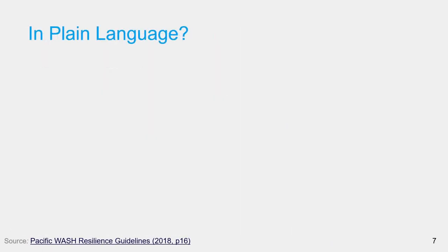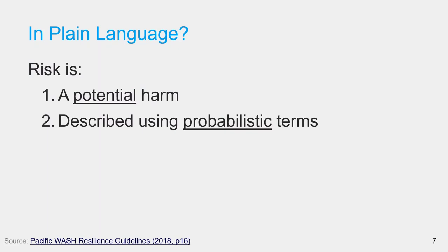Keeping those complex definitions of risk aside for a moment, let's look at the concept in plain language. A risk is a potential harm. The word potential here is important. We don't use the term risk for an event that has already taken place. Therefore, we always describe risk using probabilistic terms.